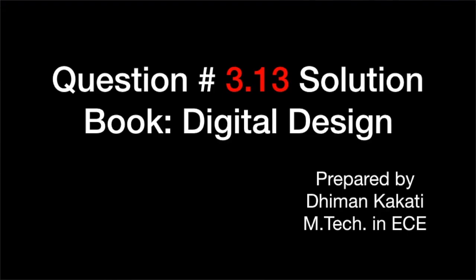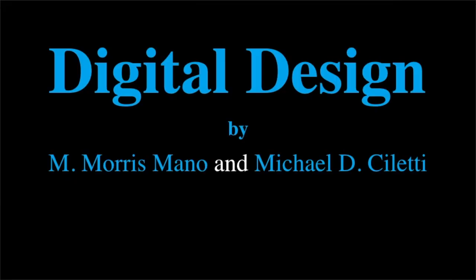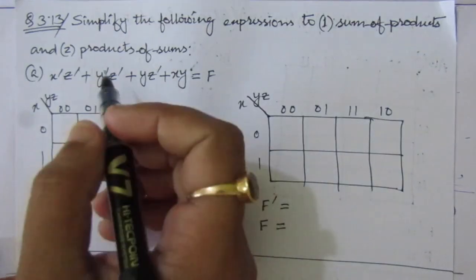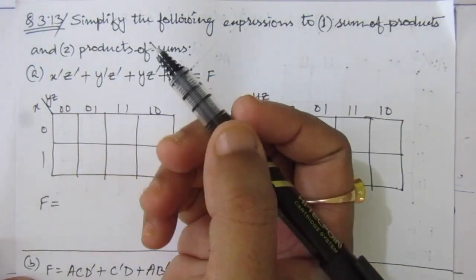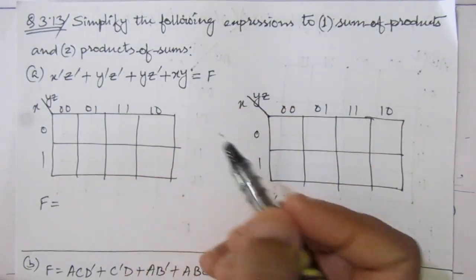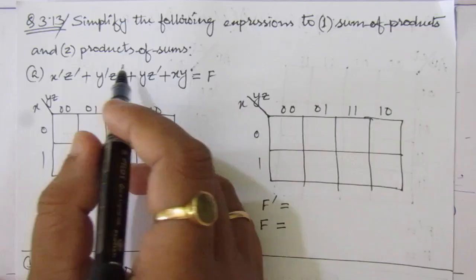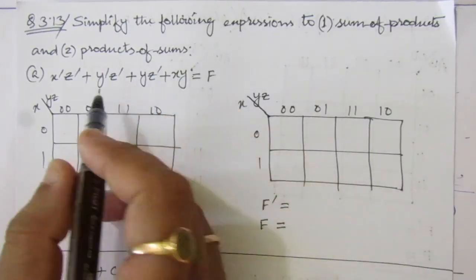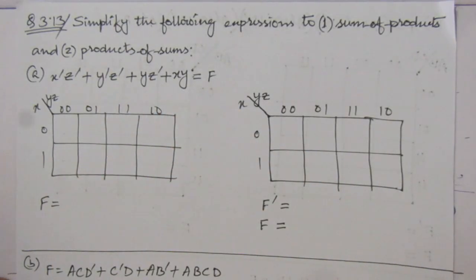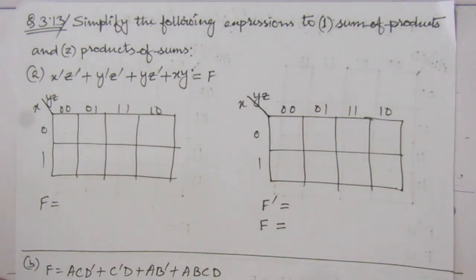Dear students, I welcome you all to this problem solution series in digital electronics. I am solving problems from the textbook Digital Design by Morris Mano and Michael Ciletti. In this video I am solving problem number 3.13 from chapter 3. The problem is: simplify the following expressions to sum of product and product of sum expressions. We are given four different expressions A, B, C, and D, and from that we have to find the simplified SOP and POS expressions.